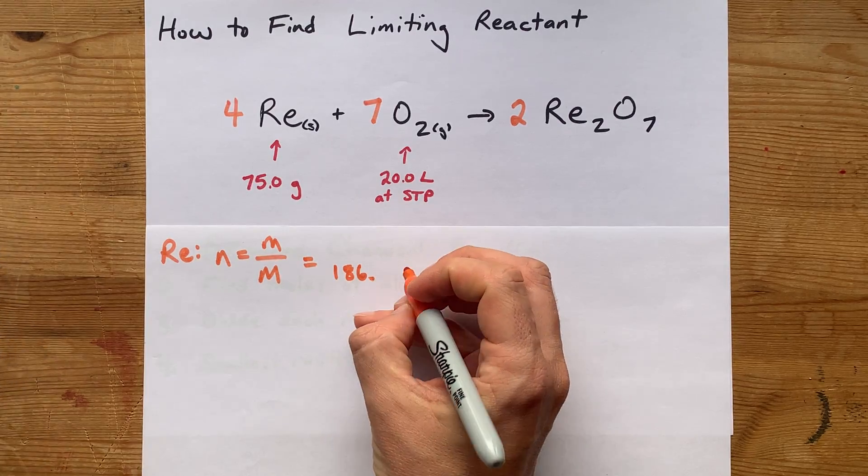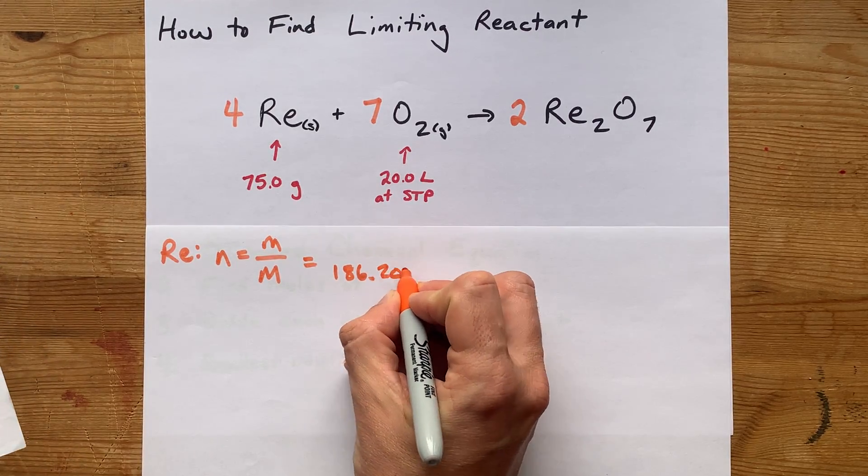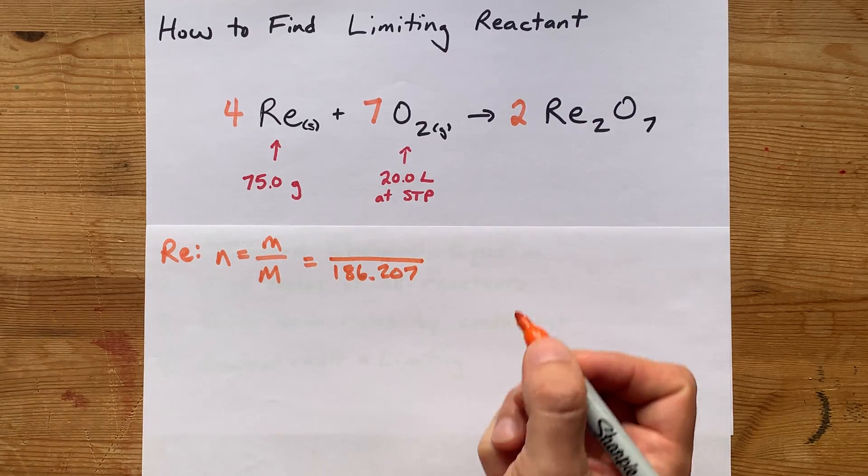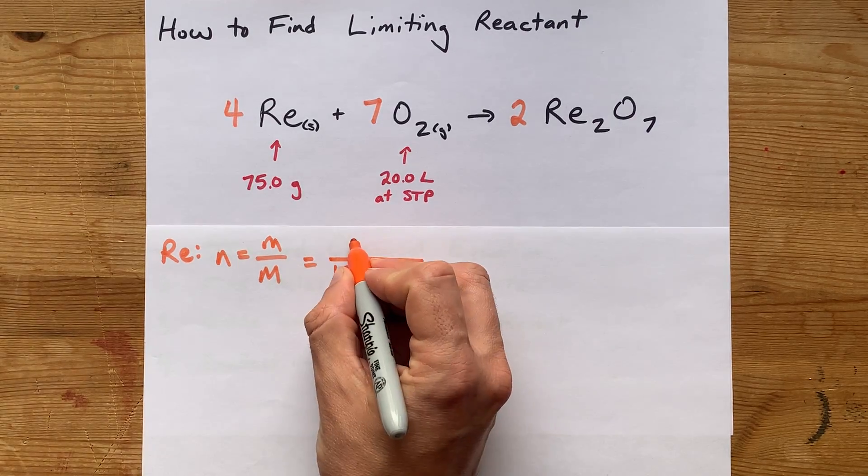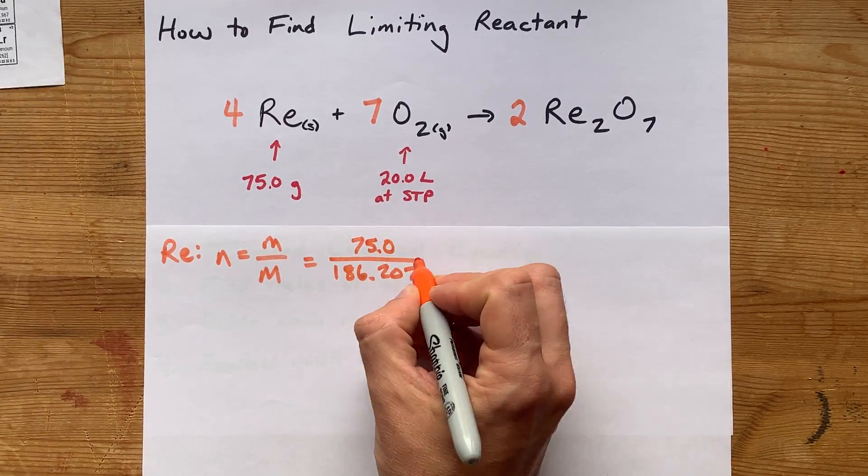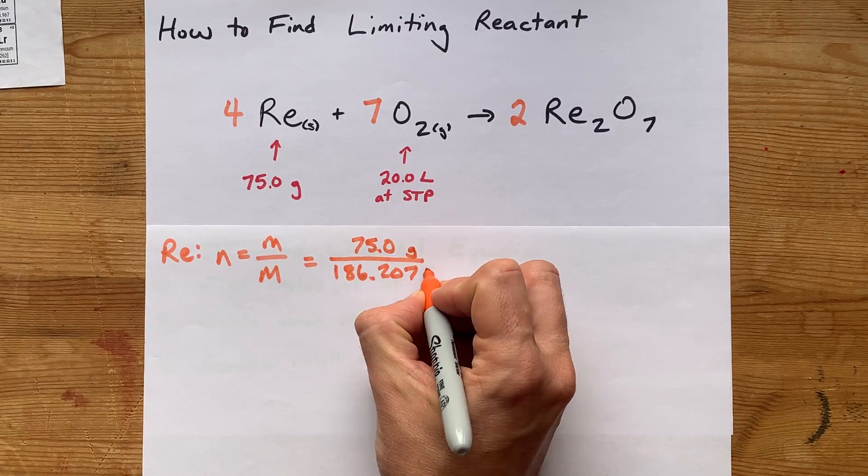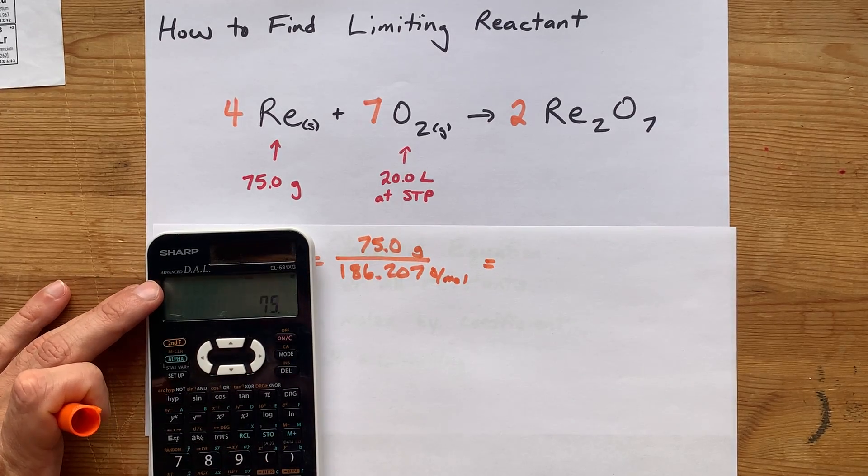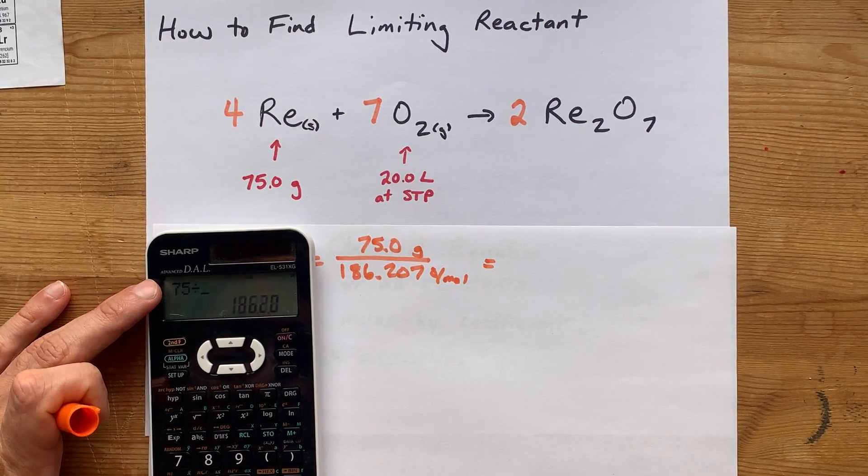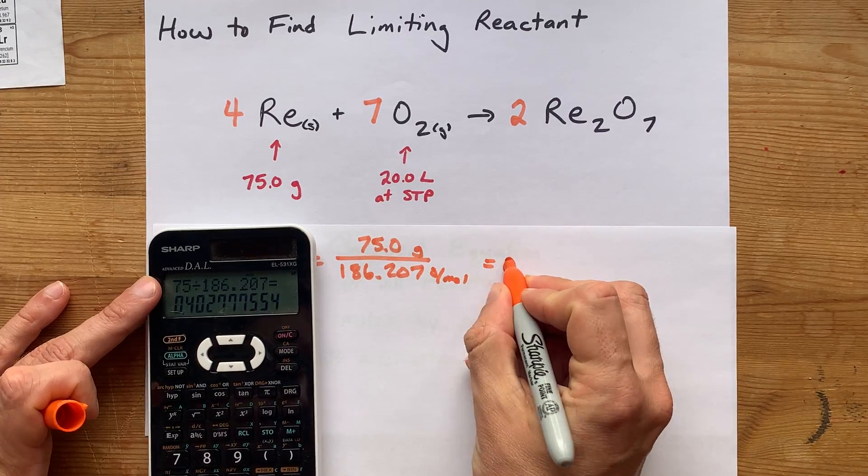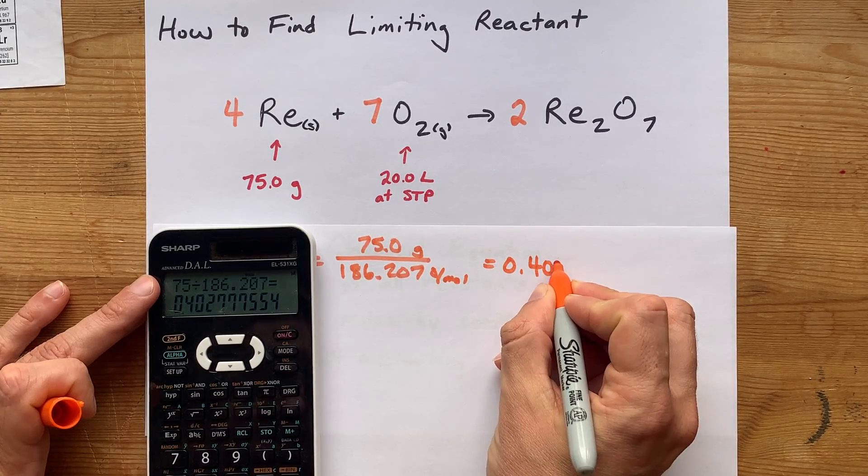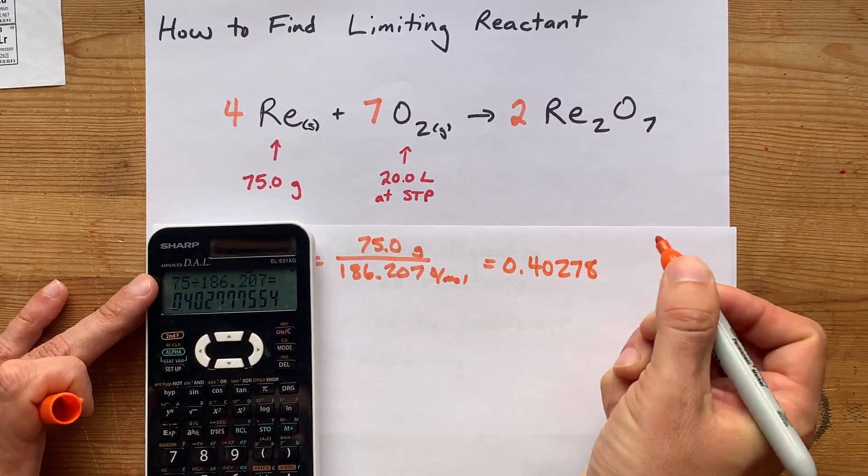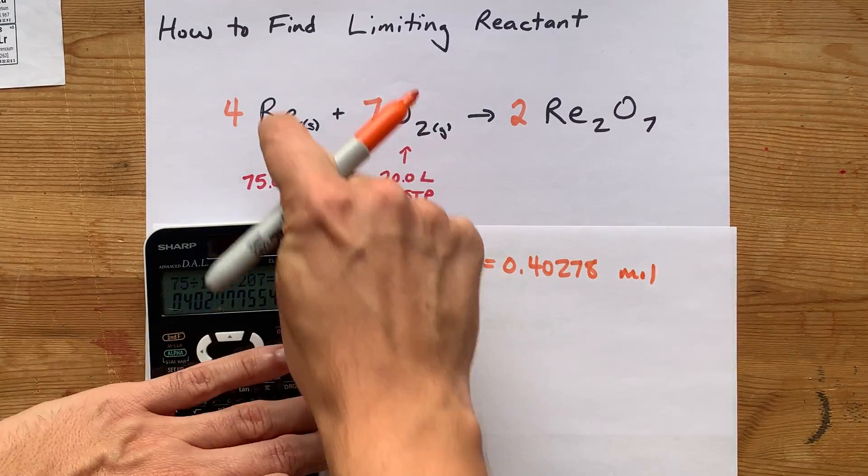So 186.207, according to my periodic table, that's grams per mole. When you divide 75 grams by that number of grams per mole, you get the number of moles of rhenium you have. That's 75 divided by 186.207, which equals 0.40278 moles of rhenium.